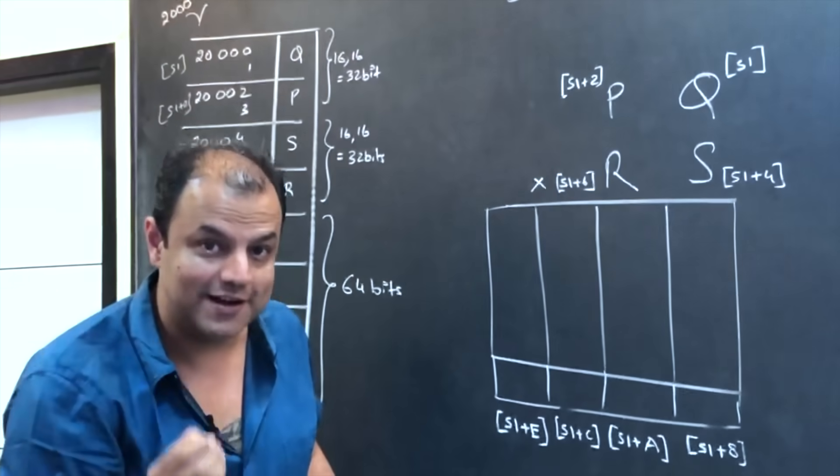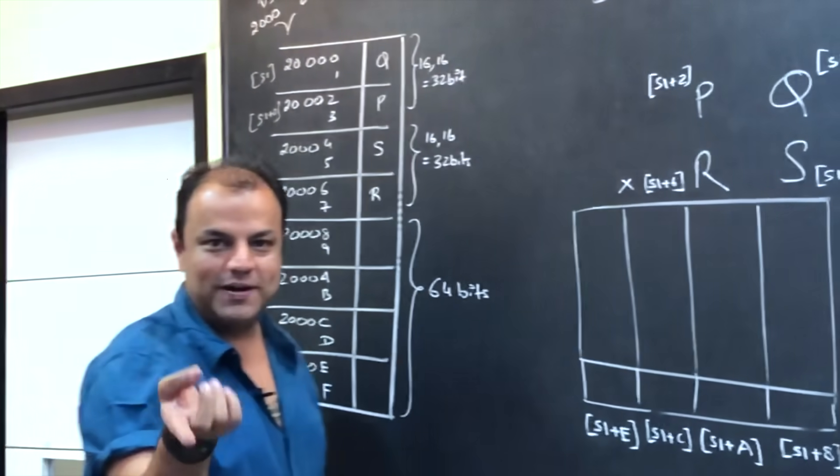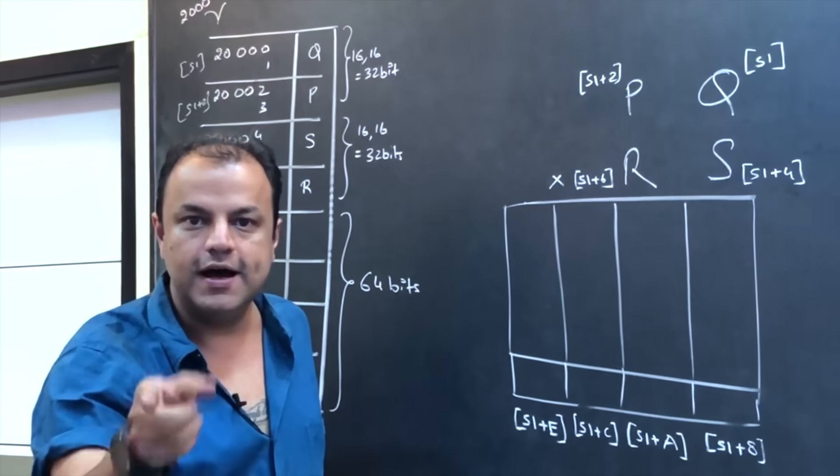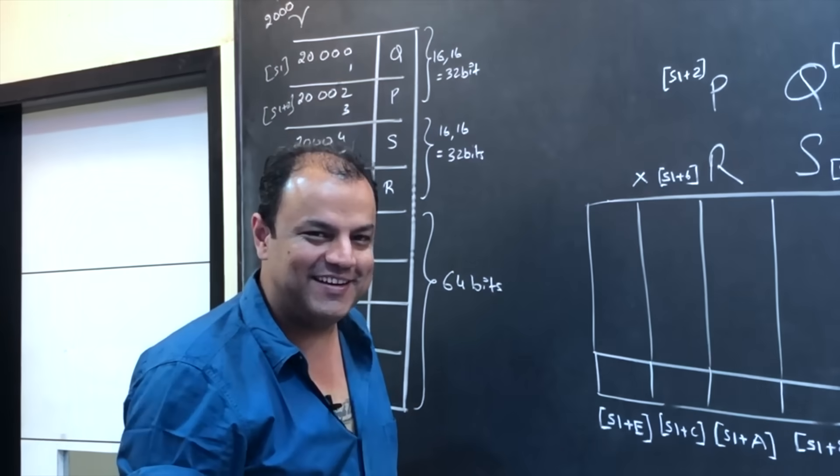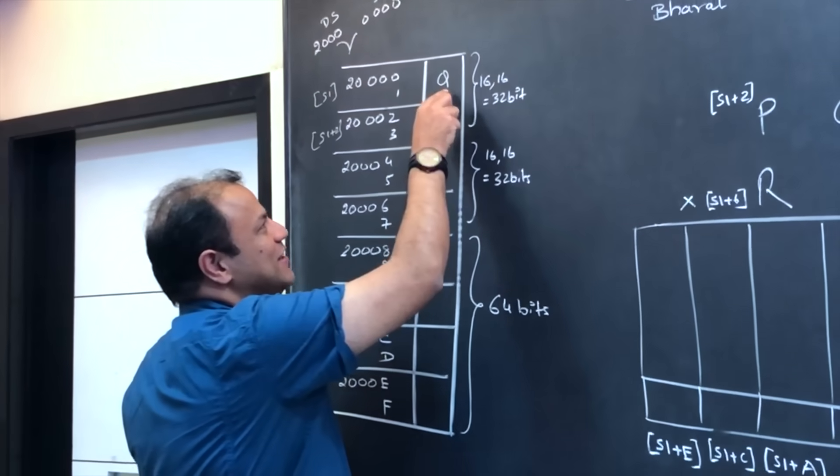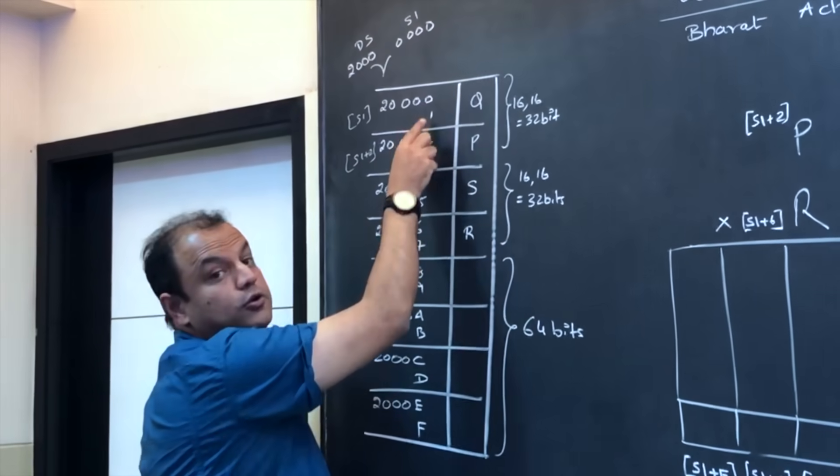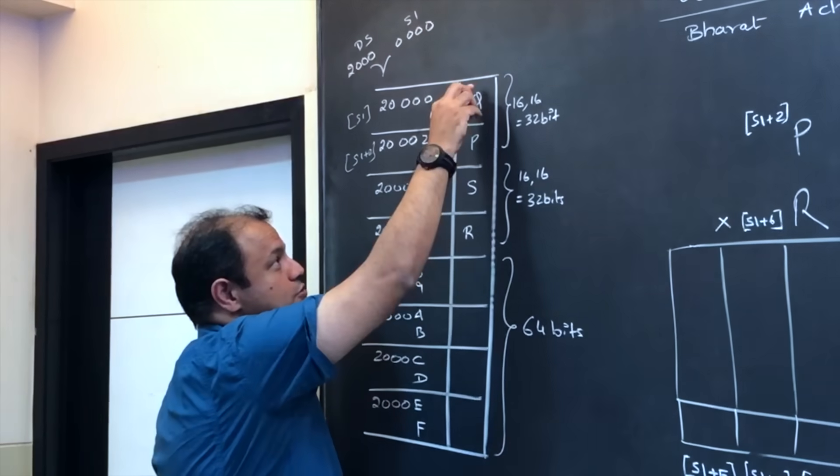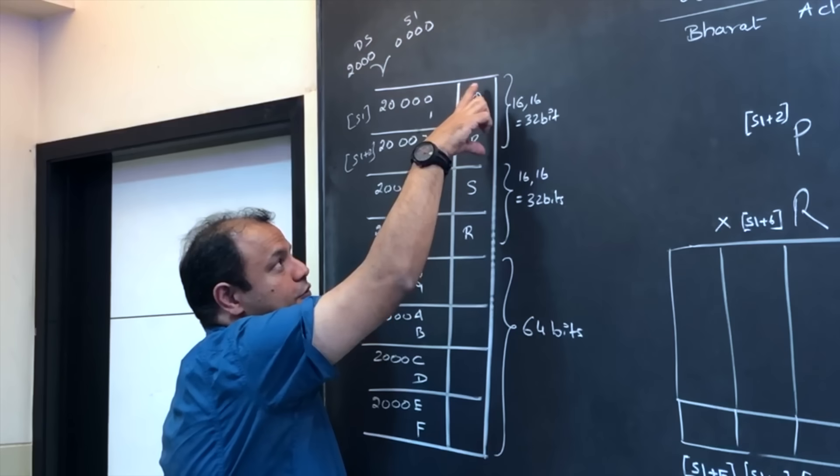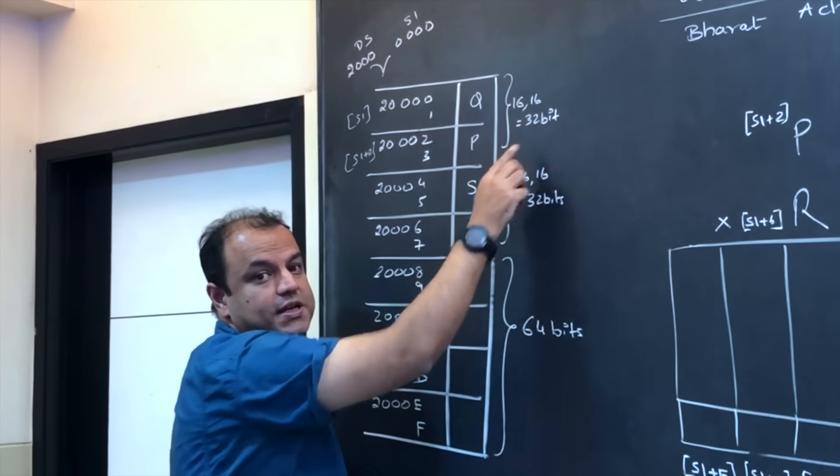If you know the basics of storing data in the memory, yes, lower byte is always stored at the lower address. Higher byte is stored at the higher address. This rule is called the Little Endian rule. So here you'll have Q stored in 2 locations. Again, why 2 locations? Because Q is a 16-bit number. So this is Q. This is P. This is your first 32-bit number, 16 and 16.